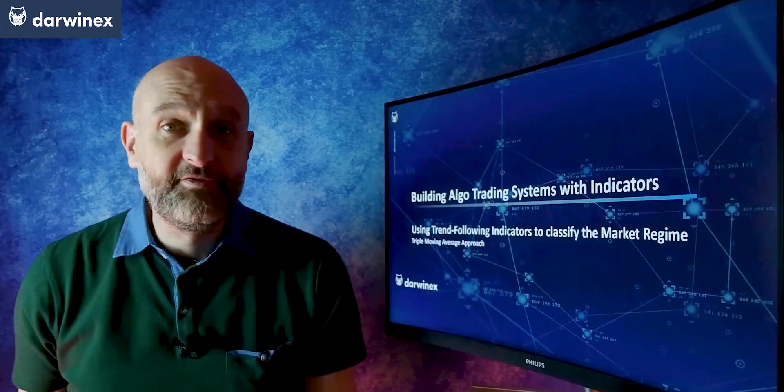So far in this mini-series on indicators, we've looked at three ways of determining whether the market regime is trending. We first looked at the Aroon indicator and then more recently considered the use of a single moving average and also a dual moving average approach. Today we look at our fourth and final option, which is to use a three moving average approach.